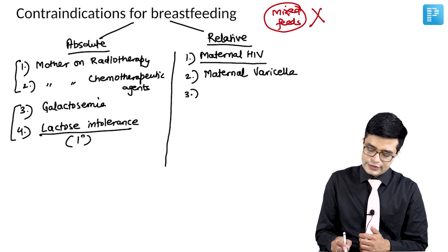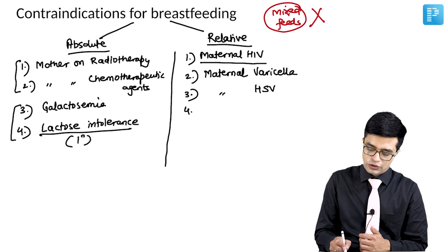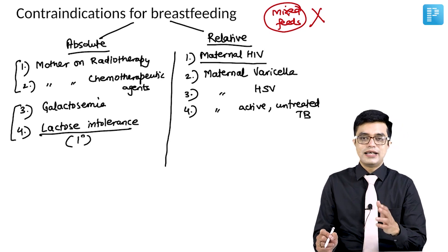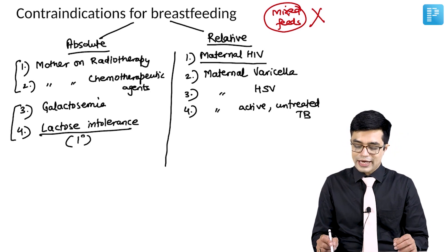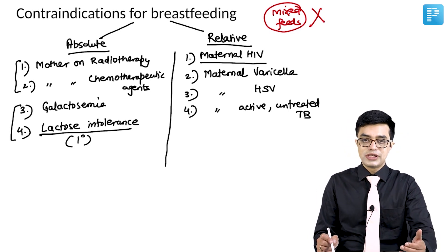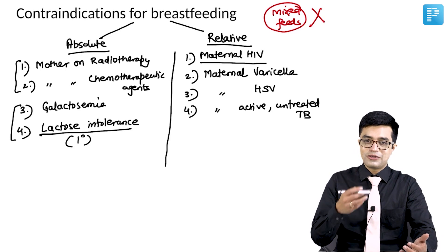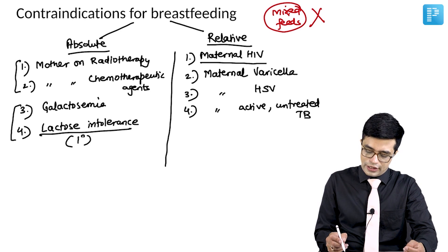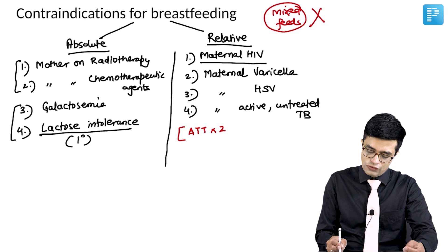Another relative contraindication is maternal varicella infection. Third is maternal herpes simplex virus infection. Fourth is maternal active untreated tuberculosis. Tubercle bacilli do not pass in breast milk, but if the mother has active pulmonary tuberculosis that is untreated, through fomites and the sputum route it can cause infection in the baby. Remember that if the mother is on anti-tubercular therapy (ATT) for two weeks or more, you can allow breastfeeding.